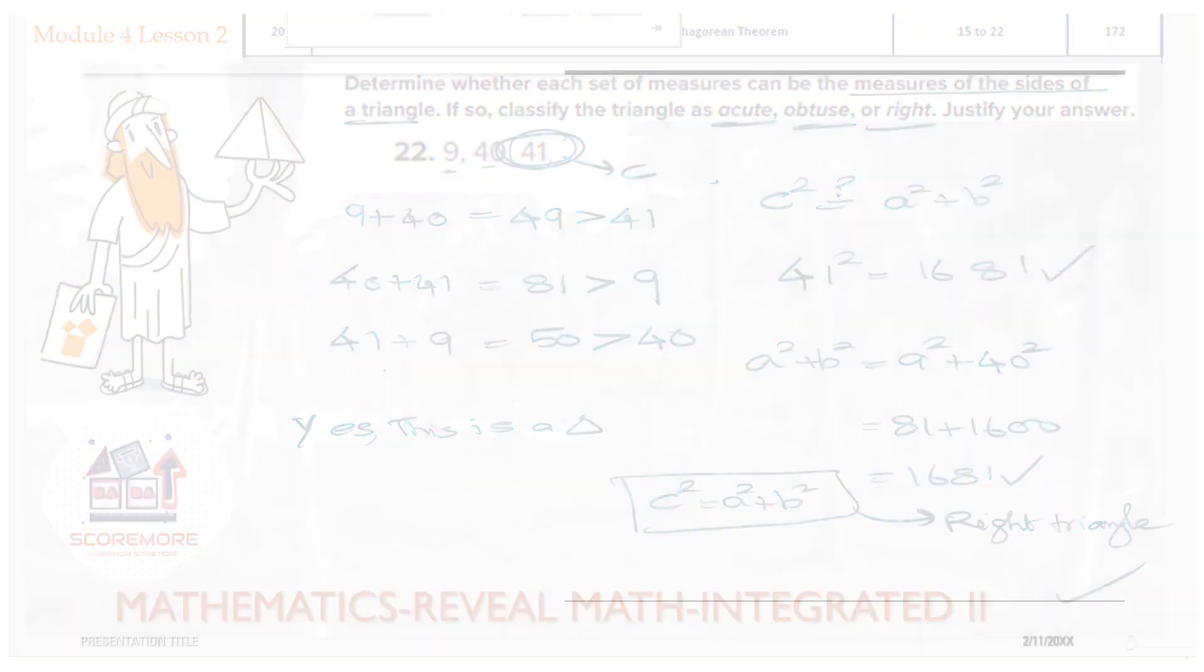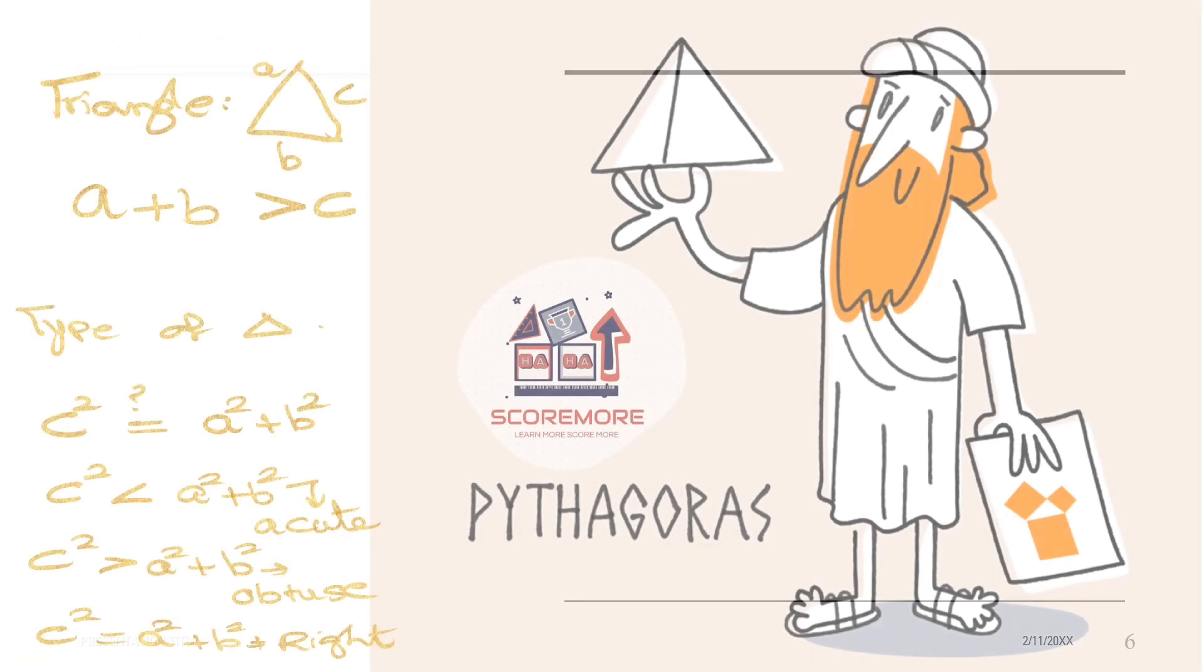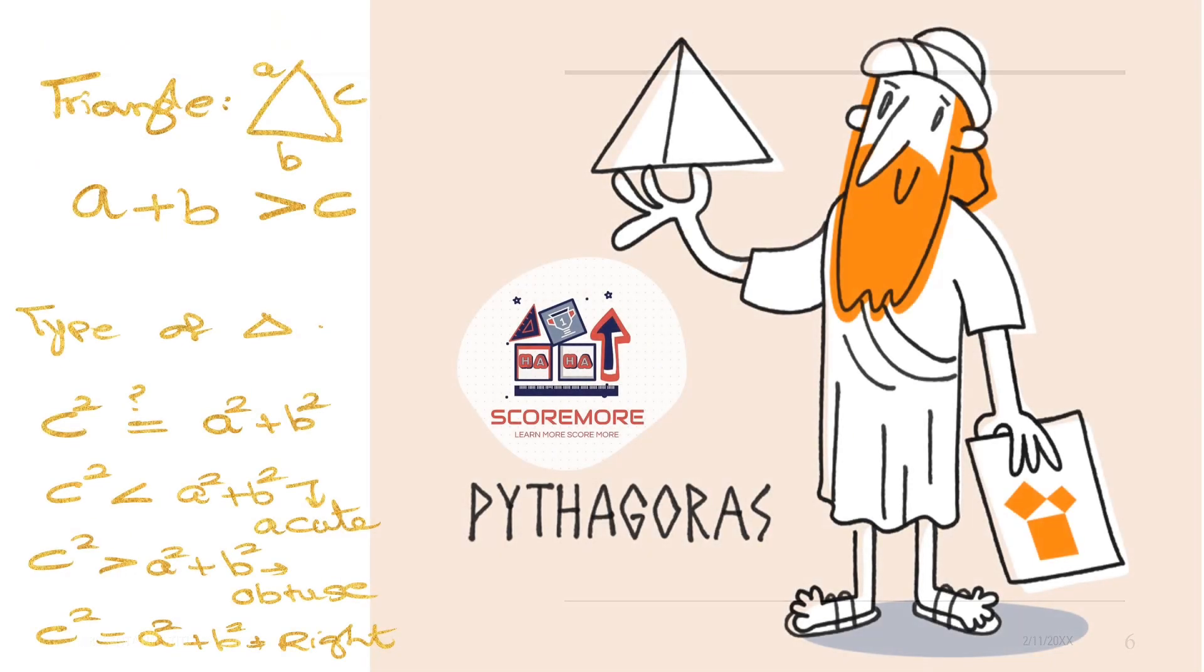Okay, so the summary of the lesson. If you want to find whether this is a triangle, add any two sides. It should be bigger than the third side. To find the types of triangles, first choose the larger side. Square them. Add the sum of the other two squares. And then, if they are equal, conclude that this is right angle. If c squared is less than, then it is going to be acute. If c squared is more than, it is going to be obtuse.